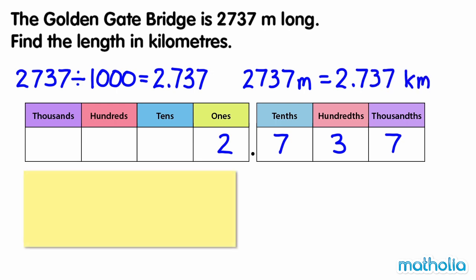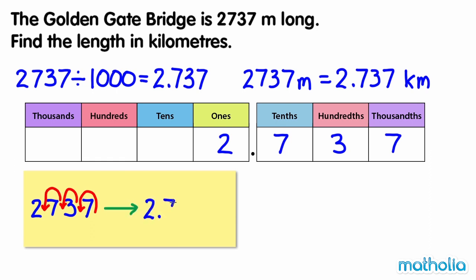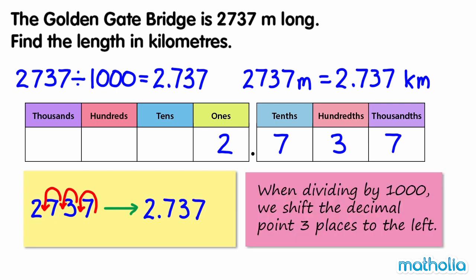Another way we can divide by 1000 is to shift the decimal point. Shifting the decimal point three places to the left also gives 2.737. When dividing by 1000, we shift the decimal point three places to the left.